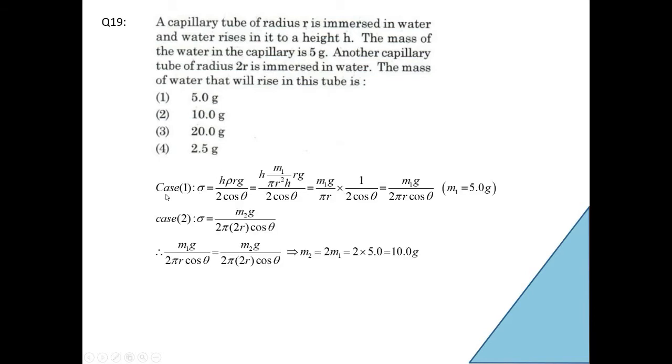How to do this problem? We can see in case 1, we use this formula. This is a formula you should be knowing from your theory. Sigma is equal to h rho r g by 2 cos theta. h is the water column height, rho density of the liquid, here it is water, r radius of the capillary tube and g acceleration due to gravity, theta angle of contact. So sigma is equal to rho is mass by volume. So first time mass you take as m1, volume pi r squared h. Approximately the shape of water inside the capillary tube will be cylindrical. So pi r squared h, r radius of the capillary tube, g acceleration due to gravity, 2 cos theta. Mass by volume is density. Now you simplify this. This h and this h will cancel. This r, 1 r will cancel. So m1 g by 2 pi r cos theta equals sigma. Here given m1 is 5.0 g.